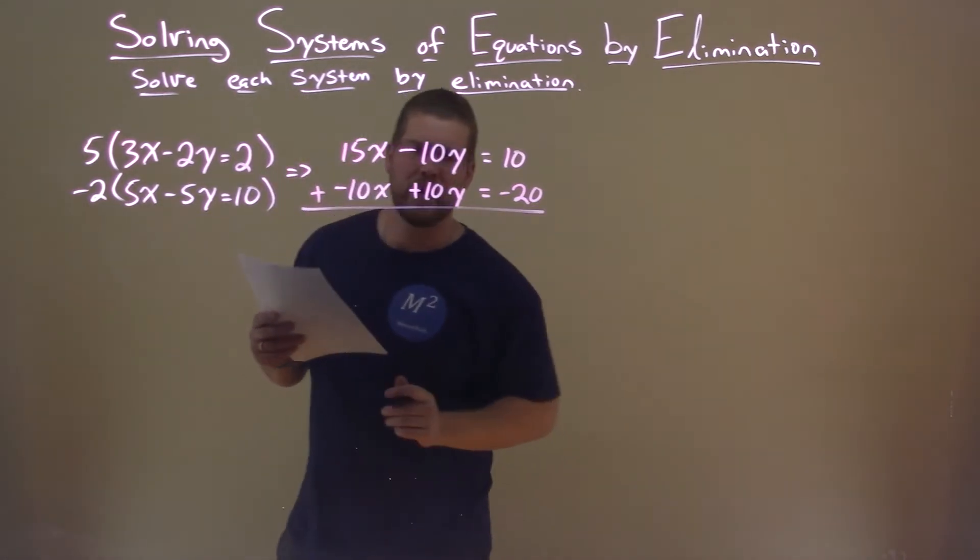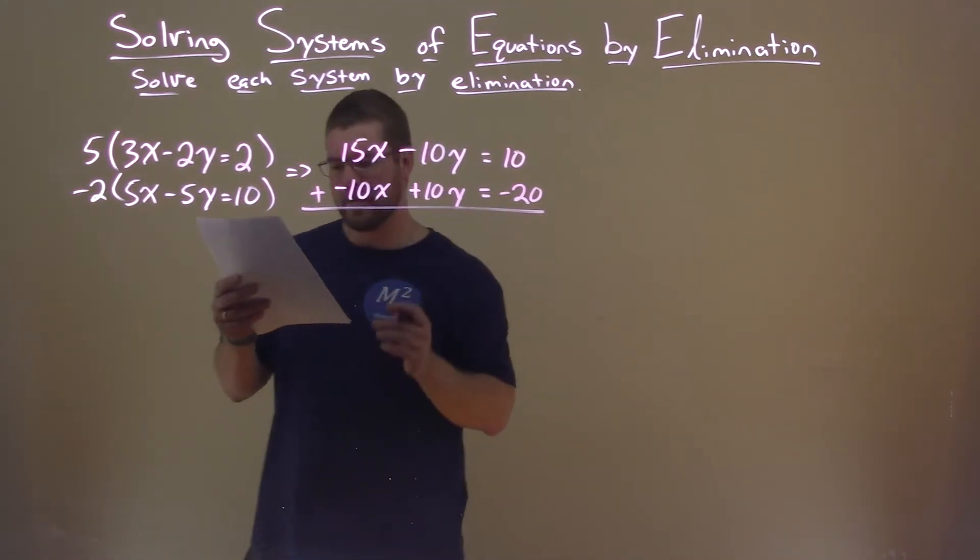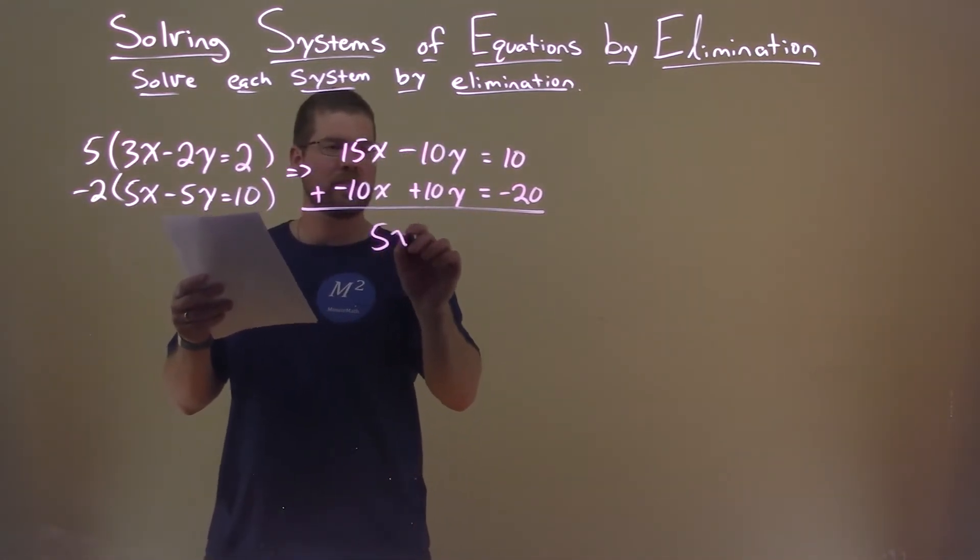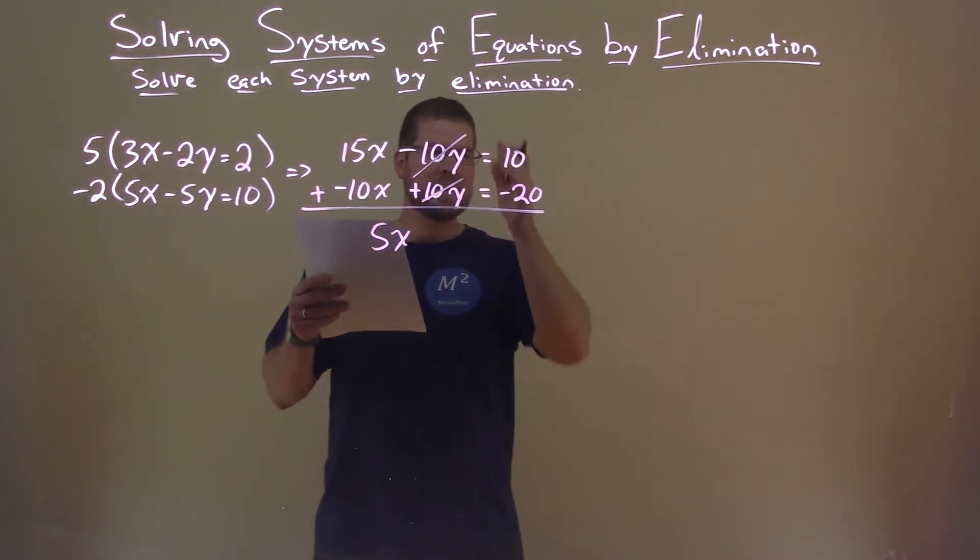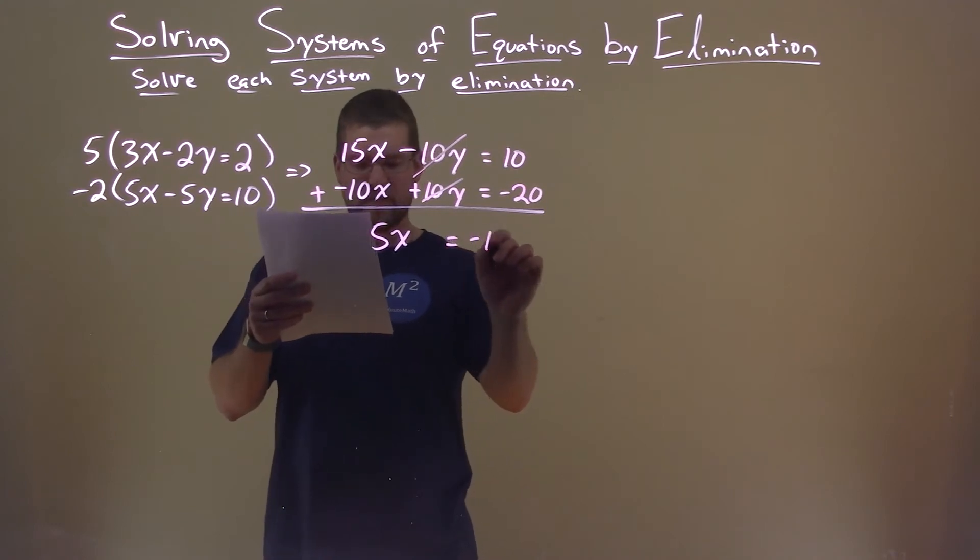Add the equations together: 15x plus negative 10x is 5x. Negative 10y plus 10y eliminates. That was our goal. 10 plus negative 20 is negative 10.